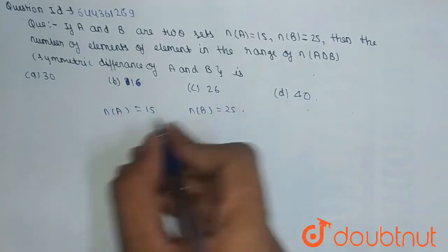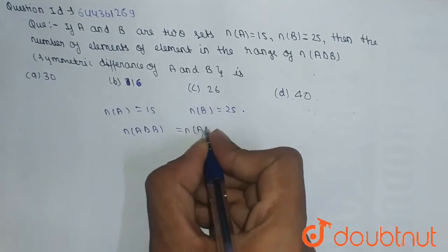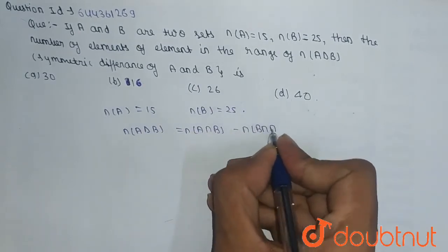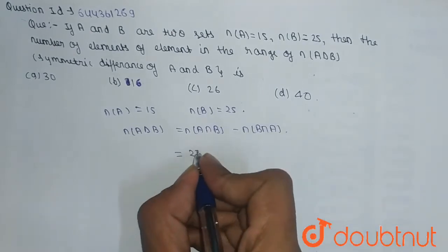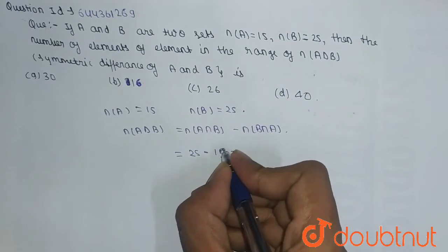So n(A Δ B) is equal to n(A ∩ B') minus n(B ∩ A'). This will be equal to 25 minus 15, which is equal to 10.